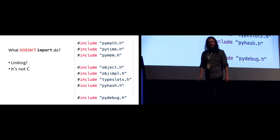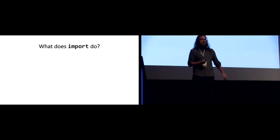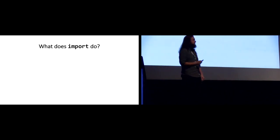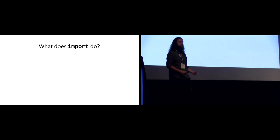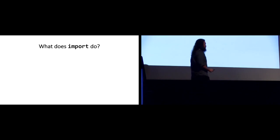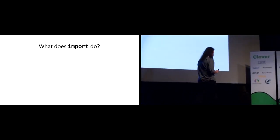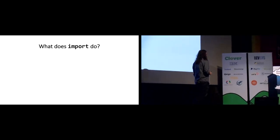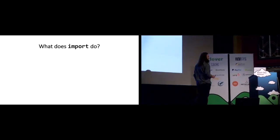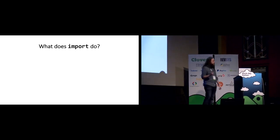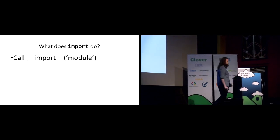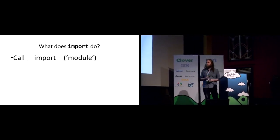The C include directive is an instruction to the compiler: when you're compiling my program, first go find these files and glue the text of them together into one great big source file, and then compile that all at once. That gluing-together process is called linking, and that is not what Python does. Python does not textually link your code. It turns out that the import statement in Python is actually syntactic sugar — a simpler way of writing something more complicated.